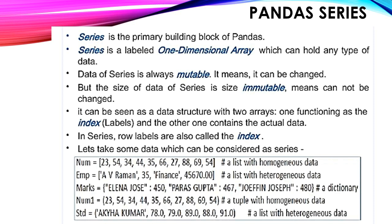There are two properties of series: mutable and immutable. Data is mutable whereas size is immutable. This means if we have five elements in a series — 1, 2, 3, 4, 5 — and we try to insert a 6th element, there will be an error because the size limit is 5. However, if we try to change the 5th element with any other number, for example replacing 5 with 10, that is possible because data is mutable. Size cannot be changed — that is called immutable.